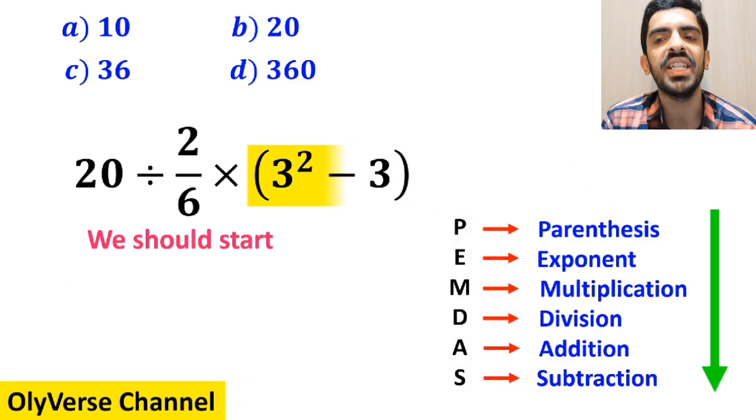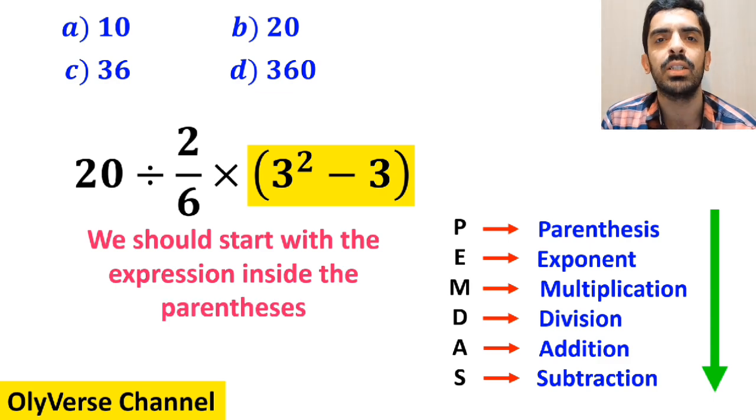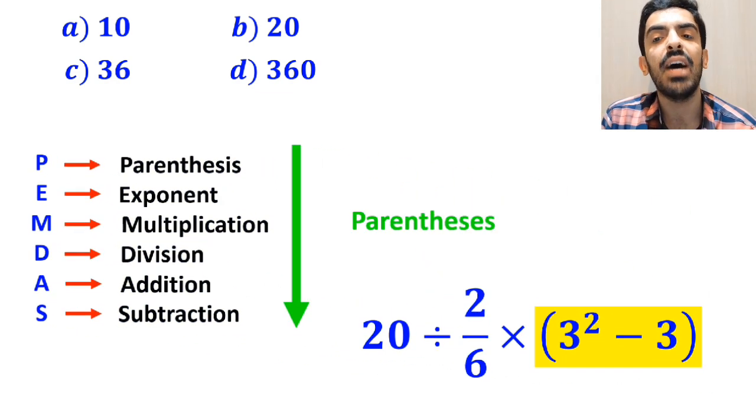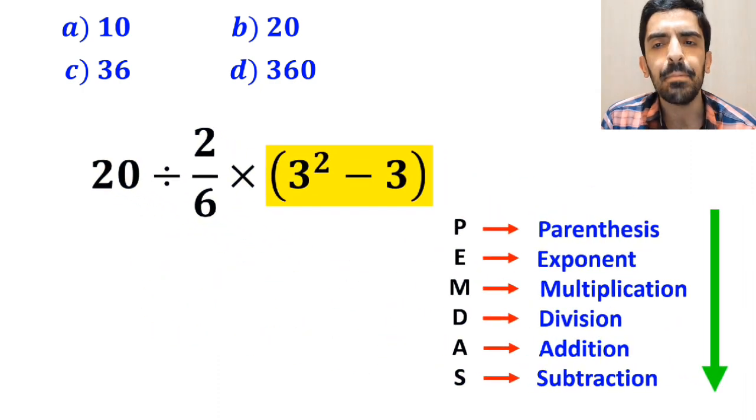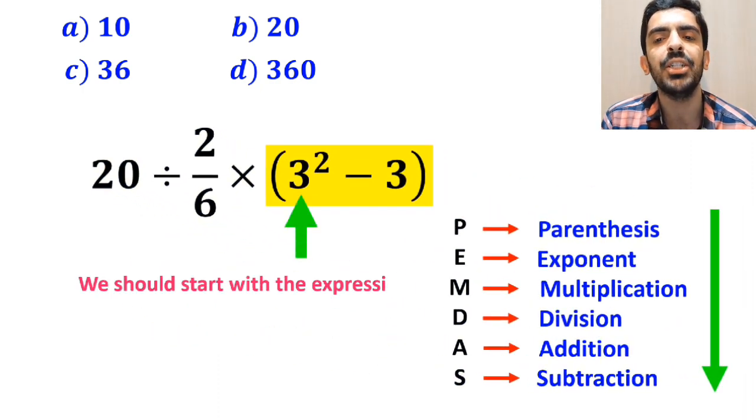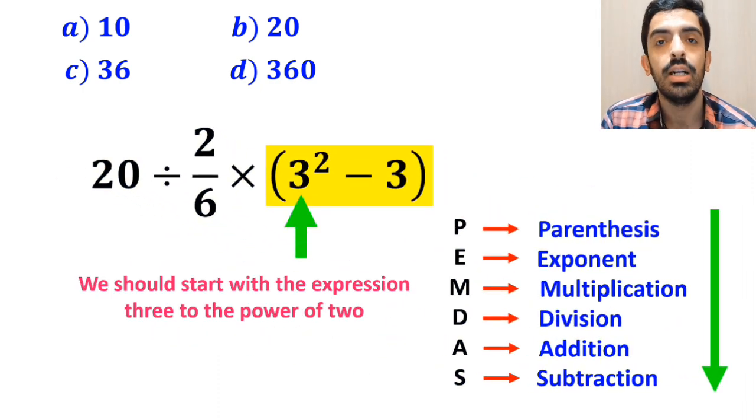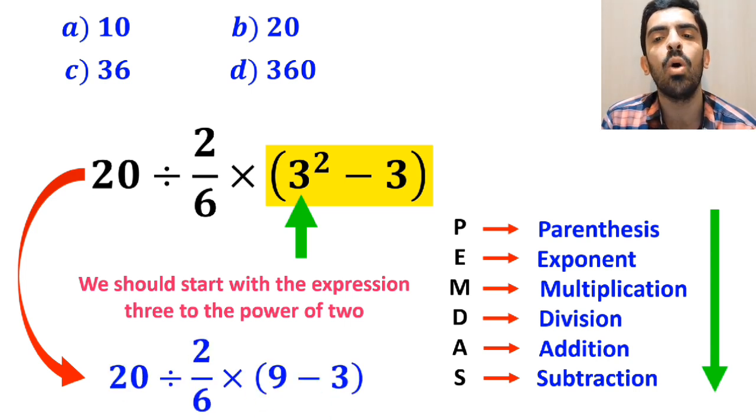So, we should start with the expression inside the parenthesis first, because parenthesis have the highest priority than the other operations. And inside the parenthesis, we should start with the expression 3 to the power of 2. So, instead of this expression, we can write 20 divided by 2 over 6 times 9 minus 3 inside the parenthesis.